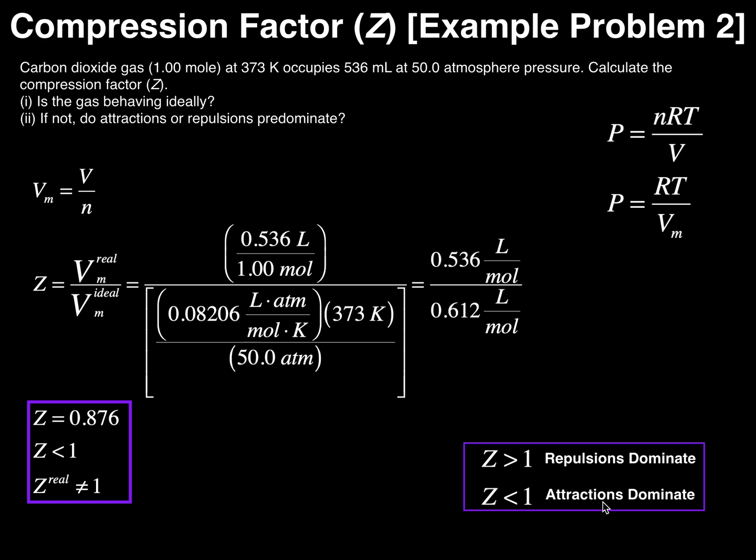That does not mean there's no repulsions. Again, both repulsions and attractions exist within the gas to some extent. But in this case, because Z is less than 1, attractions dominate in this gas.